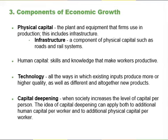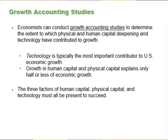When society increases the level of capital per person, we call the results capital deepening. The idea of capital deepening can apply both to additional human capital per worker and to additional physical capital per worker. Since the late 1950s, economists have conducted growth accounting studies to determine the extent to which physical and human capital deepening and technology have contributed to growth. For studies of the US economy, three lessons commonly emerged. First, technology is typically the most important contributor to US economic growth. Growth in human capital and physical capital often explains only half or less than half of the economic growth that occurs. New ways of doing things are tremendously important.